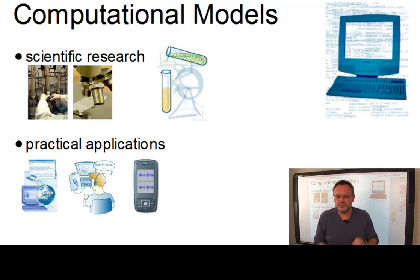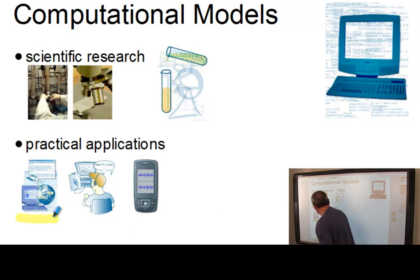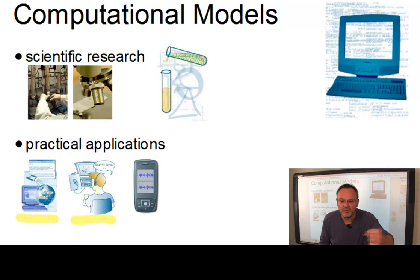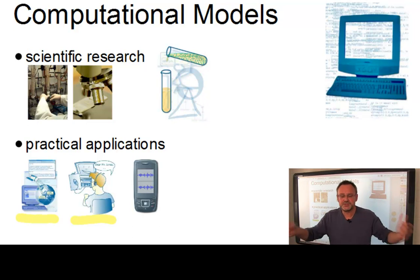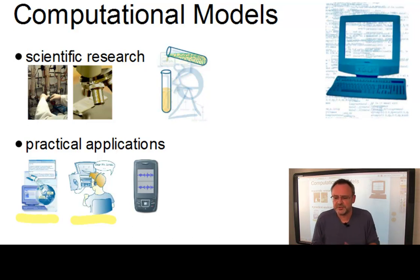Most of human knowledge is recorded in linguistic form. Current computer systems, like machine translation or dictation systems, can access only the form of this information — for example, they retrieve a document from storage and display it, but they cannot access the content. Machines that can understand language could access this content for the benefit of their users and even contribute new content of their own.